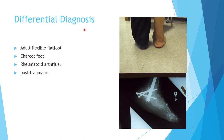Not every case of acquired flat foot that develops in adulthood is due to posterior tibial tendon dysfunction. It can also occur in rheumatoid patients, post-traumatic cases, Charcot, or as an extension of adult flexible flat foot that becomes more obvious.